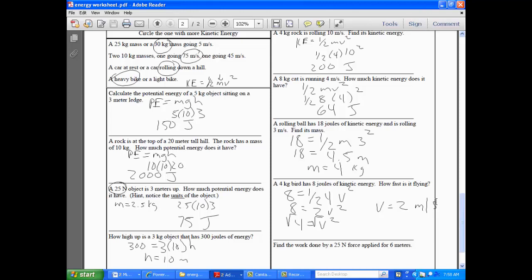And the last one, we haven't gotten into work yet, but work is very simple, guys. It's force times distance. So 25 times 6 comes out to be what? 150 joules of work. All right. So any questions with those? All right. All right. Okay.